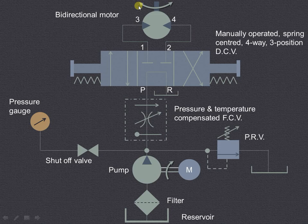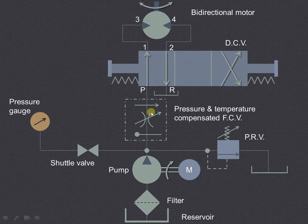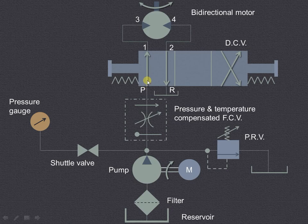Let us see what will happen when we move this direction control valve to get the left envelope mode. The liquid will be pumped from the reservoir through the filter. It will enter into the pressure and temperature compensated flow control valve, and as the variable restriction is provided, a controlled rate of liquid will be allowed to enter into port P. From P it will enter into port 1, then from 1 it will go to port 3 and rotate the motor in the given direction. The liquid from the other side — from port 4 — will enter into port 2, from 2 to R, and then go to the reservoir.